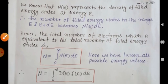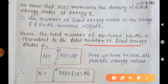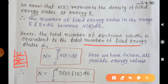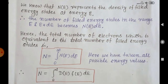The total number of electrons is equivalent to the total number of filled energy states. As we know from previous lectures, each energy state may contain only one electron. Hence the number of filled energy states is equivalent to the number of electrons.